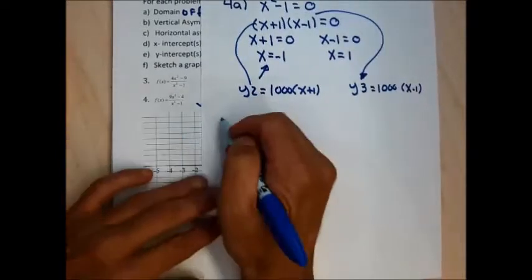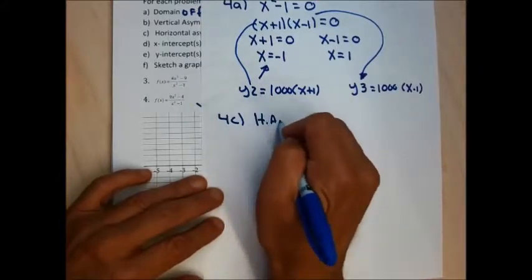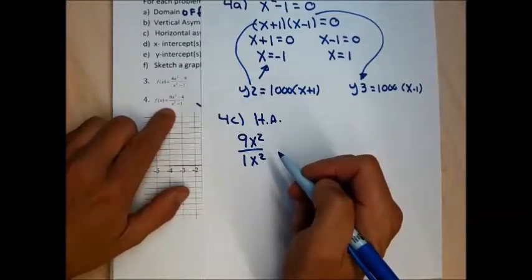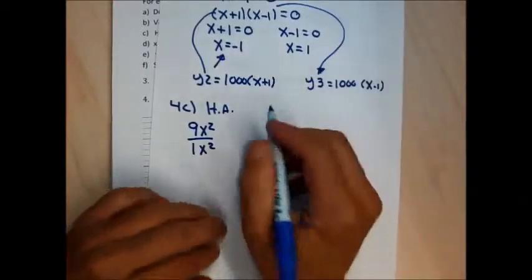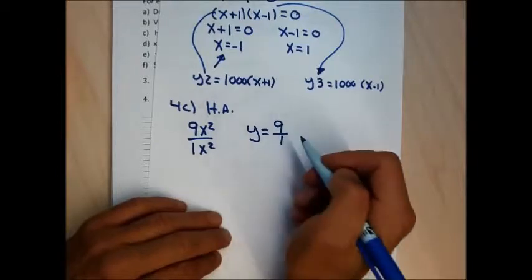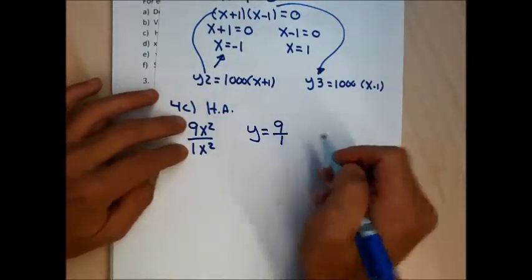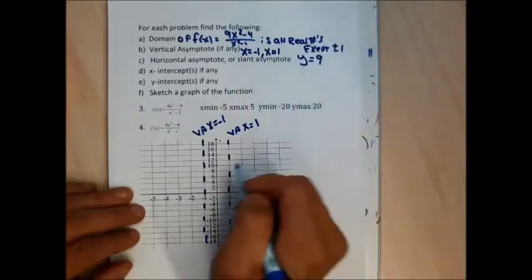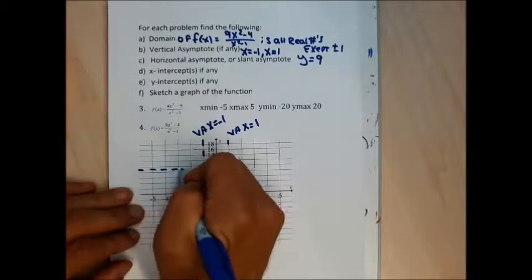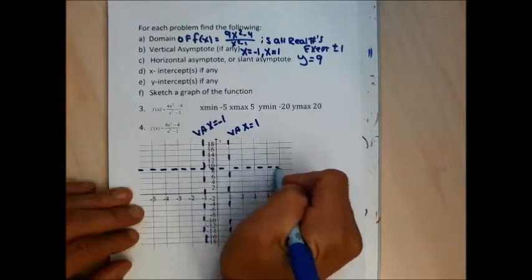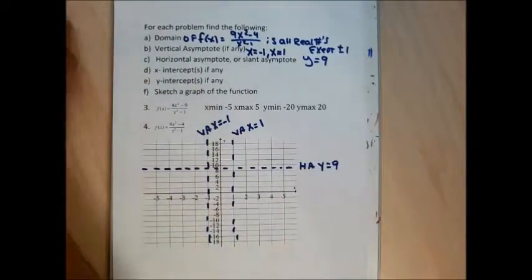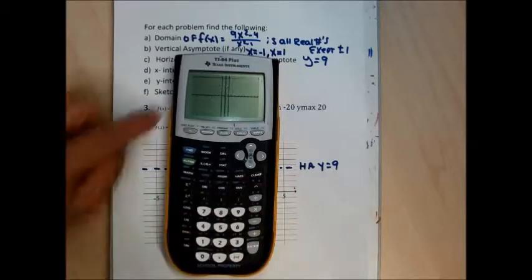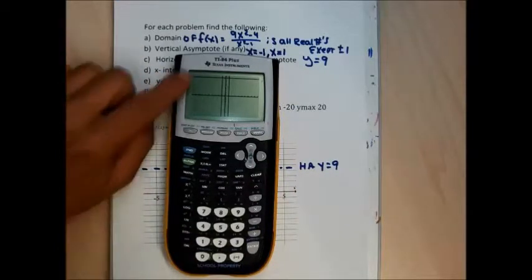For part C, the horizontal asymptote — I look at the highest exponent term in the numerator, which is 9x squared, and in the denominator, which is 1x squared. When there's a tie between the highest exponents, you divide the coefficients of the highest exponent terms to get the horizontal asymptote. So my horizontal asymptote is y equal to 9. I find 9 on the y-axis and draw a horizontal line through it. On my calculator, I go to y4, type 9, and hit enter.